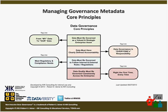This diagram of data governance core principles is something I wrote about in this month's issue of the Data Administration Newsletter. The four core principles are: data must be governed as a strategic enterprise asset; data must have clearly defined accountability; data must be governed to follow internal and external rules; and data quality must be governed consistently across the enterprise. If we can take these core principles to management and they agree with all four, it gives us the backbone we need to implement governance in our organization.